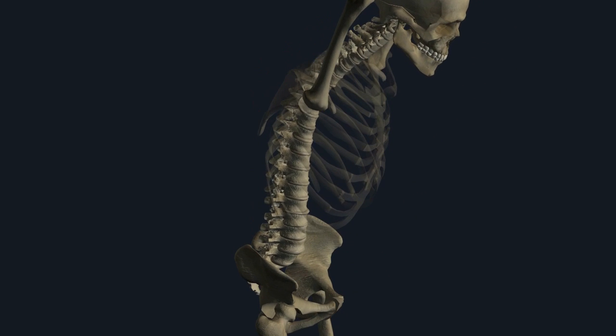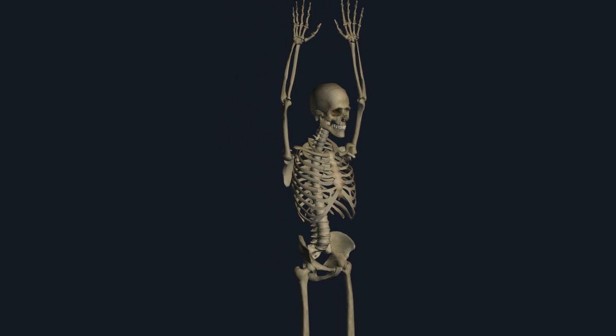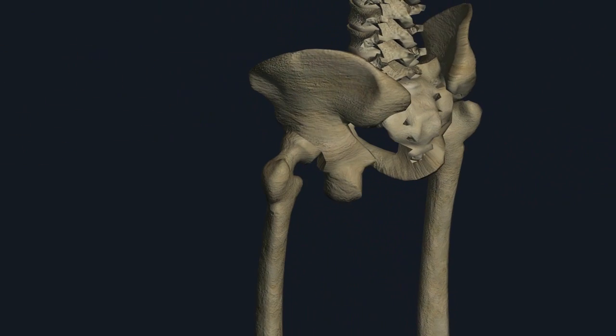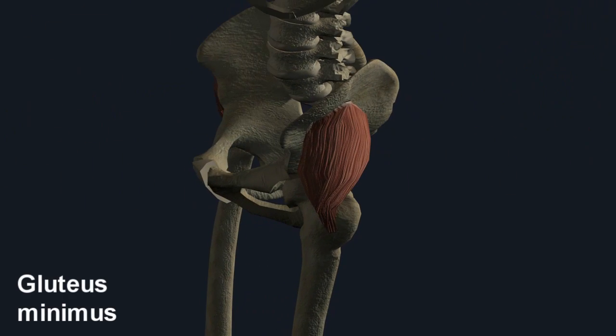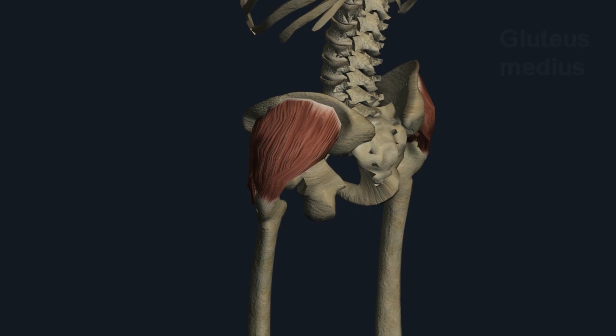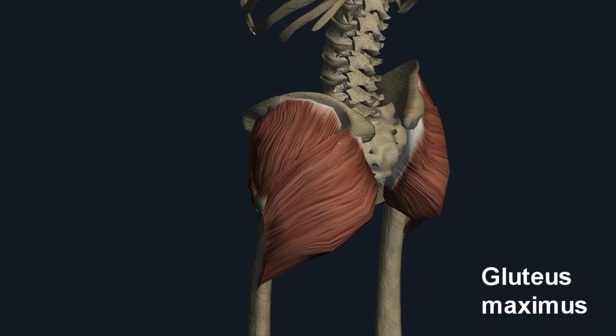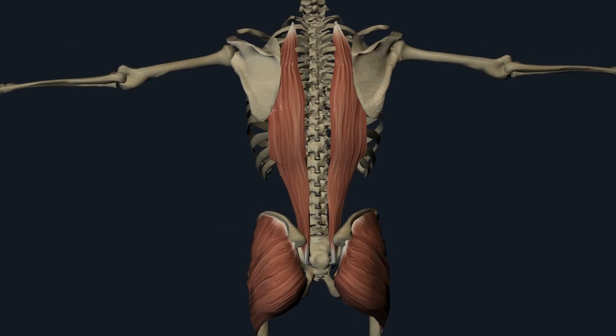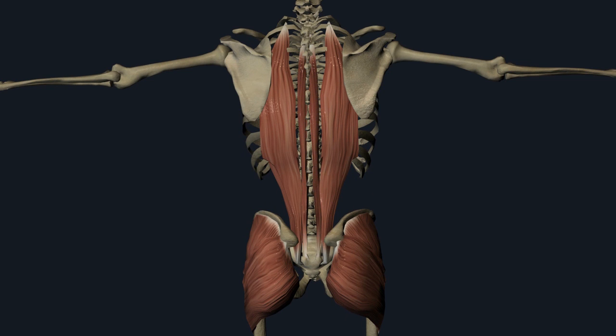Straightening from the bent position is accomplished predominantly from the powerful extensors of the hip. These include the gluteus minimus, medius, and maximus muscles. The intrinsic deep and superficial muscles of the back provide further stabilization of the lumbar spine, especially when straightening from a bent position. Strengthening and conditioning of the musculatures around the lower back is paramount to maintain proper support and alignment of the lumbar spine and therefore limiting the development of debilitating degenerative disc disease later in life.